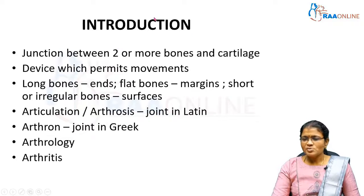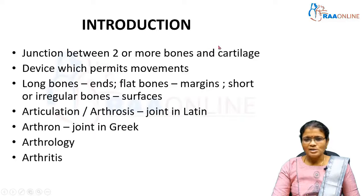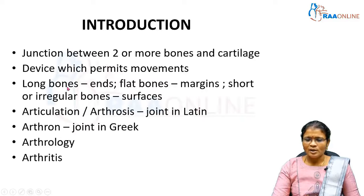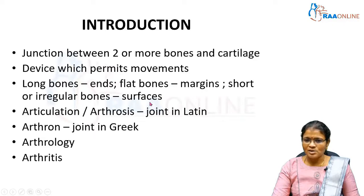Introduction — what is meant by a joint? A joint is a junction between two or more bones, and sometimes between bones and cartilage. It is a device which permits slight or more movements. There are different types of bones in our body: long bones, flat bones, and short bones. Long bones unite at their ends, flat bones unite at their margins, and short or irregular bones articulate at their surfaces.